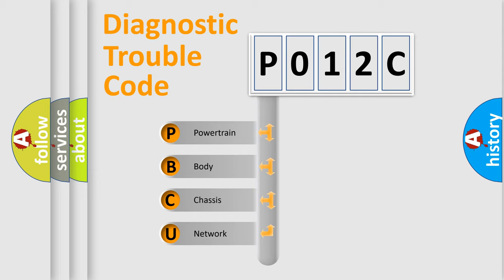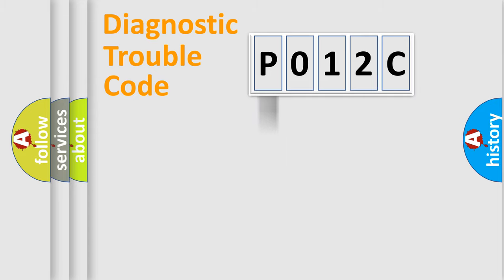We divide the electric system of automobile into four basic units: Powertrain, Body, Chassis, and Network. This distribution is defined in the first character code.